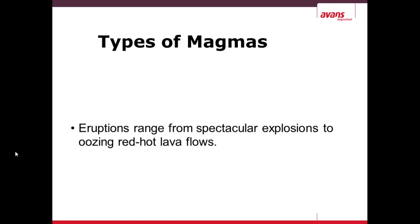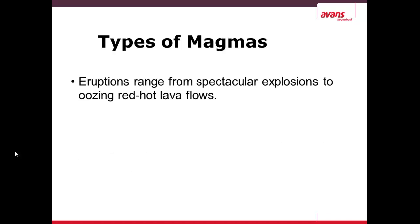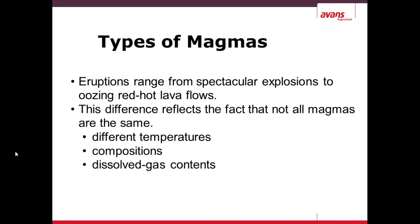There are different types of magmas. Eruptions range from very spectacular explosions to slow-moving or oozing red-hot lava flows, as seen in the previous photo. The differences reflect that not all magmas are the same — they have different temperatures, different compositions, and will have varying amounts of silica, as well as different dissolved gas contents.